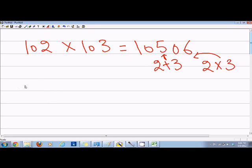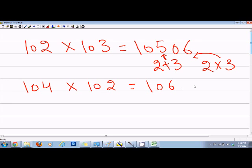For example, again, if we take 104 and 102, then the answer will be: 4 plus 2 is 6, and 4 times 2 is 8, so the answer is 10608.